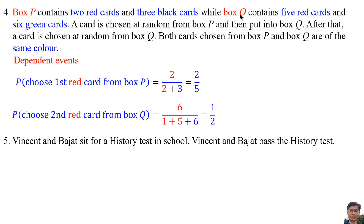After putting the first red card into Box Q, the total red cards in Box Q becomes 5 + 1. So the total cards in Box Q is 5 + 1 red cards plus 6 green cards. Therefore, the probability of choosing the second red card from Box Q is affected by the probability of choosing the first red card from Box B. So they are dependent events.